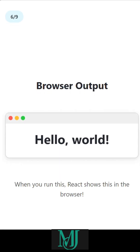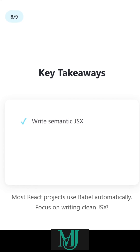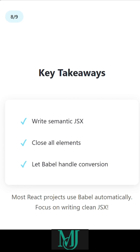Three things to keep in mind: first, always write semantic, meaningful JSX. Second, close all your elements, even self-closing ones. Third, let Babel do the conversion work — you just focus on clean code.